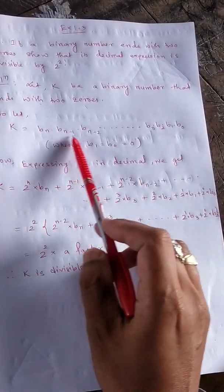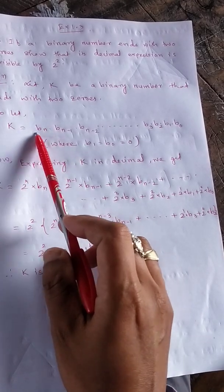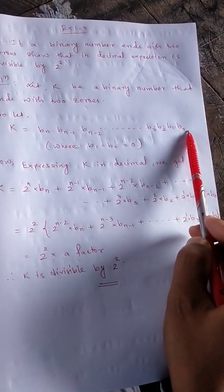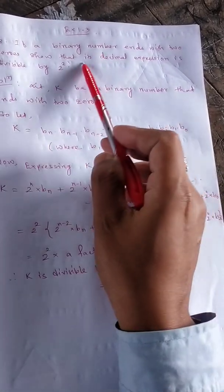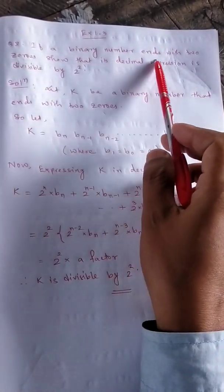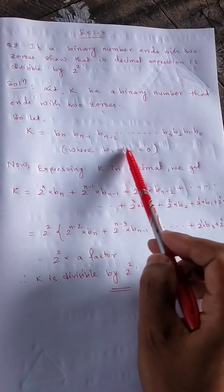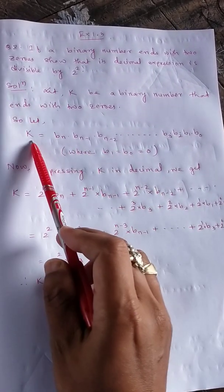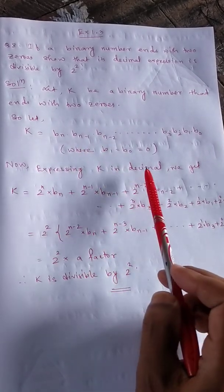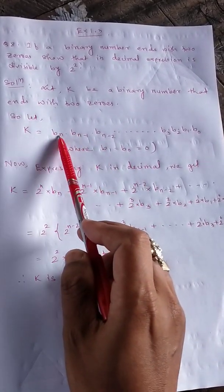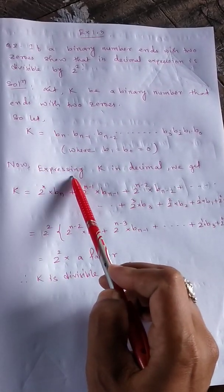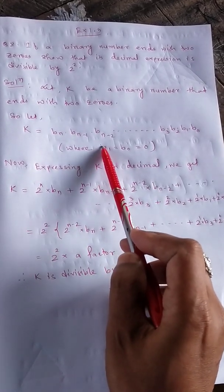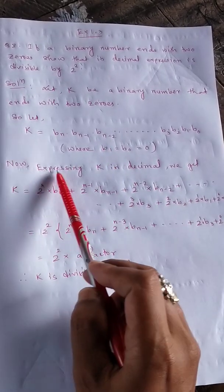So that is a binary number which starts from the highest bit and ends at b_0. We are told it ends with two zeros, so b_1 and b_0 are both equal to zero. Now to express a binary number in decimal — since binary is base two — we multiply each bit by two to the power of its position.